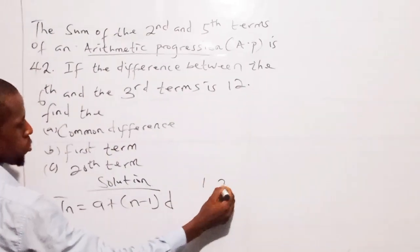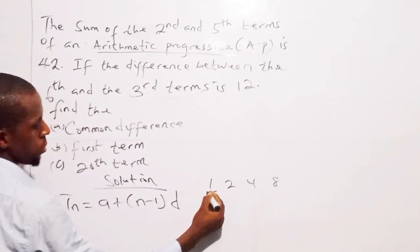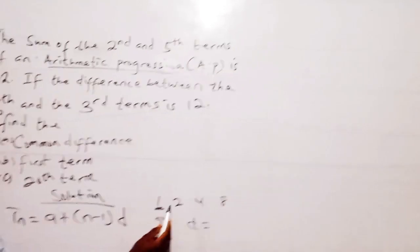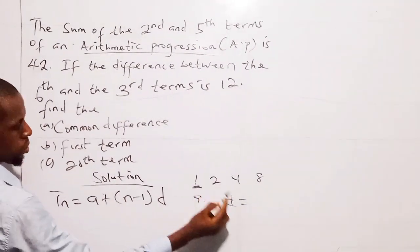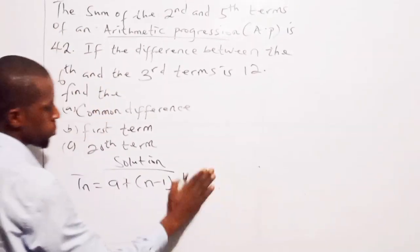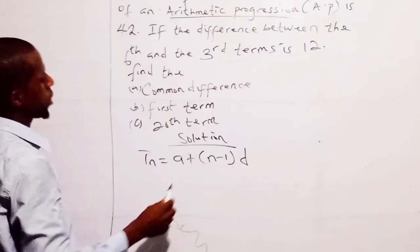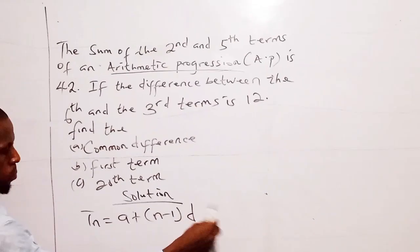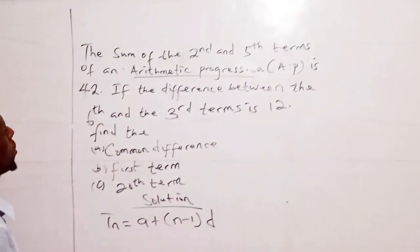If I want to find the common difference, I have to subtract the first one from the second term by saying 2 minus 1, which is 1. So these are first term and common difference. While N is the number of items, the number of times, the number of the numbers you are having in the sequence.